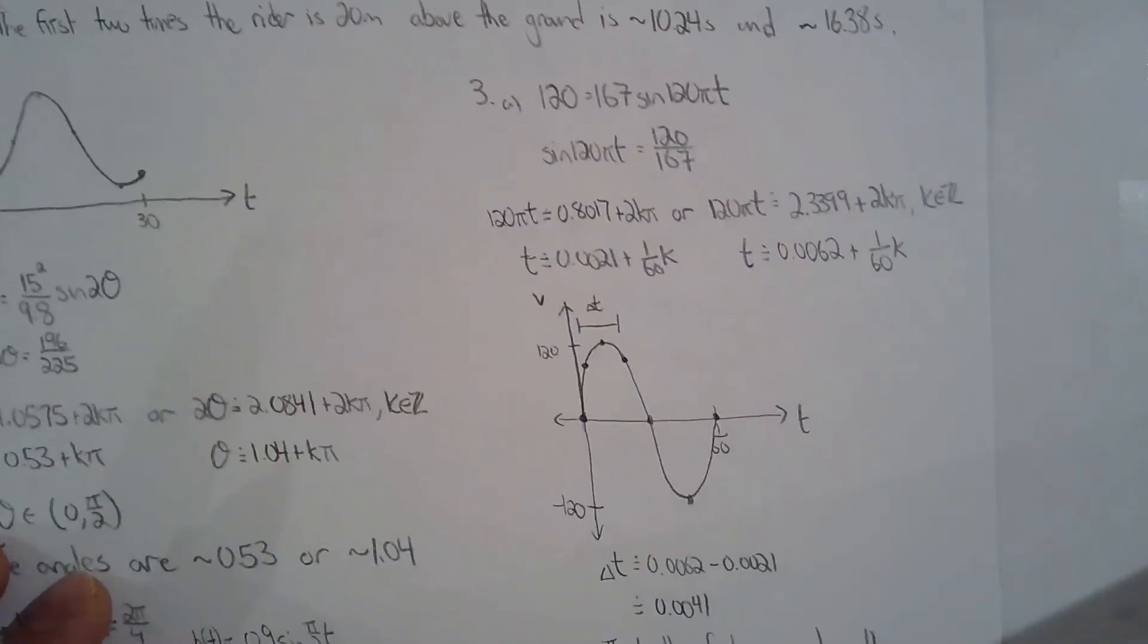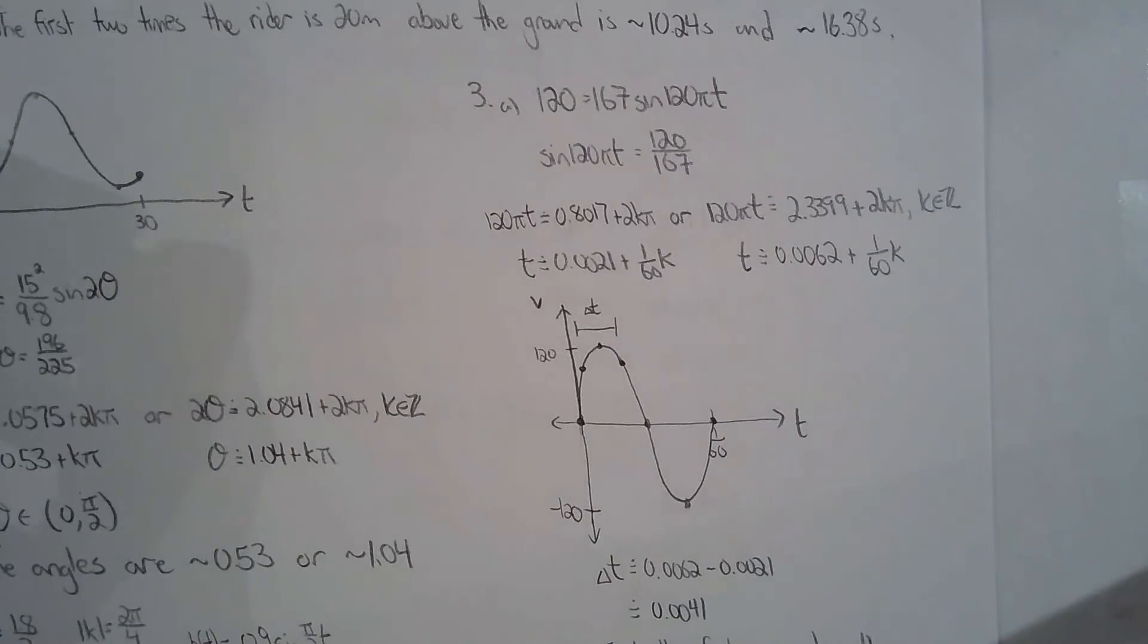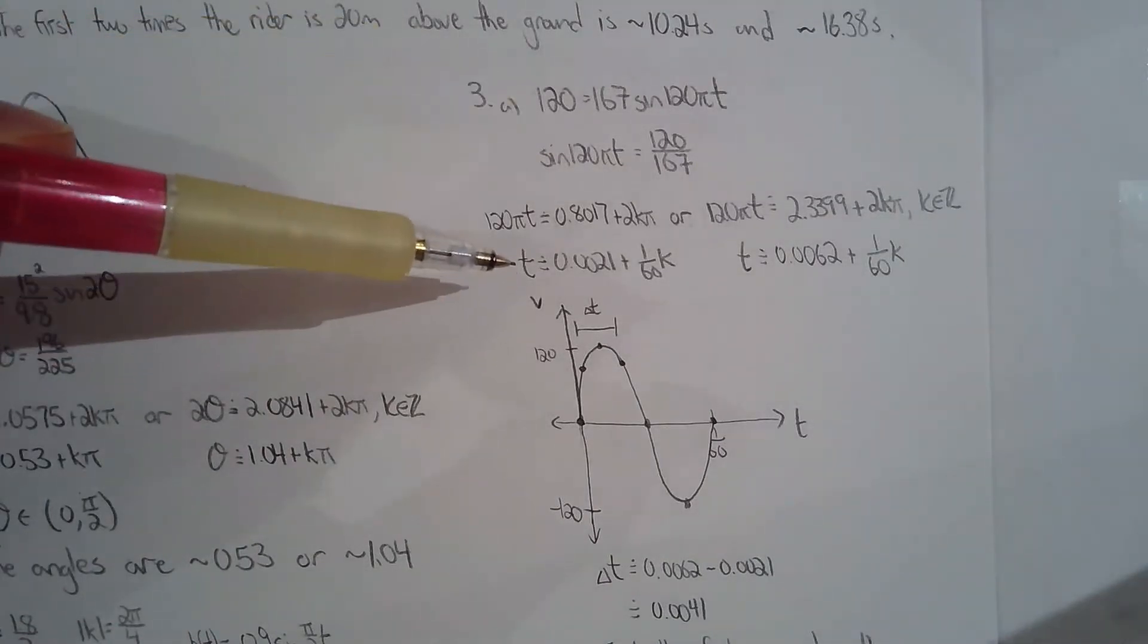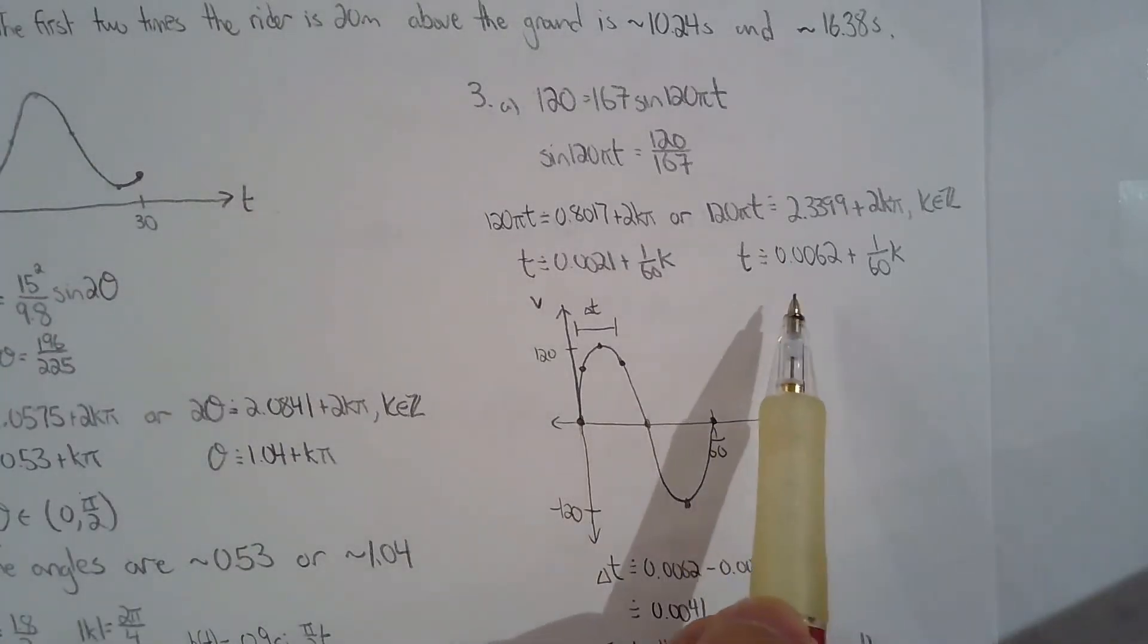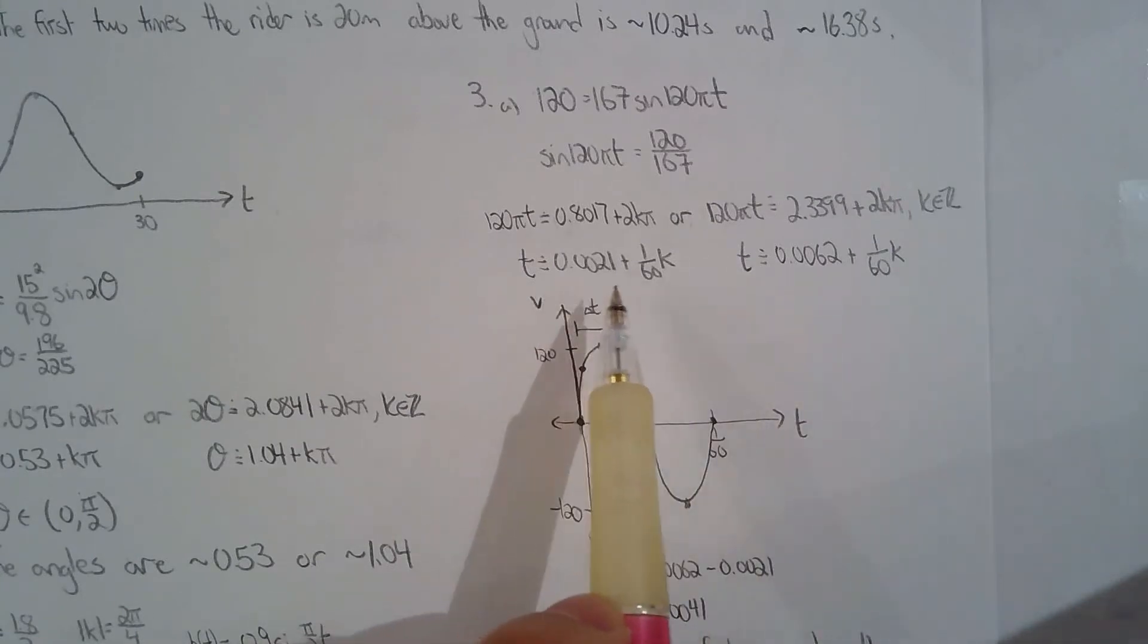Question three is basically a trigonometric inequality. So you set V to be 120 and you solve for T. Now a very common mistake is that students just take 0.0062 and subtract it by 0.0021.